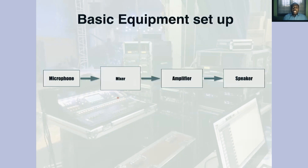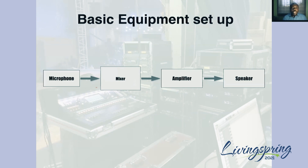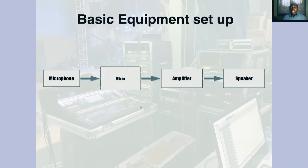The basic equipment setup consists of a microphone, a mixer, an amplifier, and a loudspeaker. This basic system will work any way we want — you will talk, and your sound will come out of the main speakers. But we discussed a lot of other processing equipment in the first section, and we'll go a little bit more in depth into that.